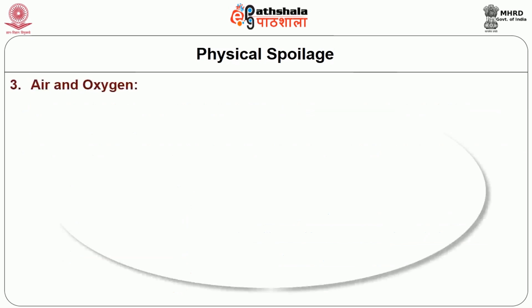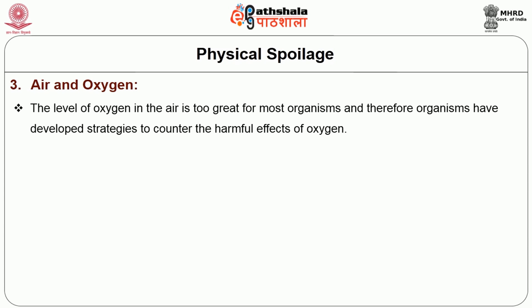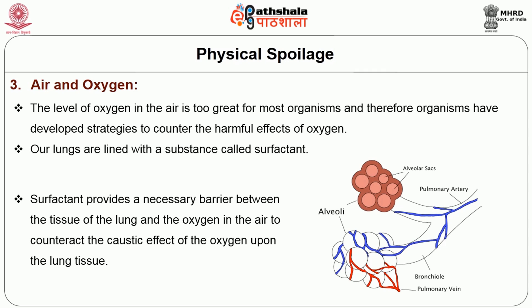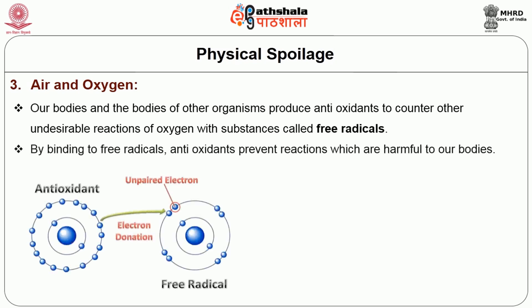Air comprises about 80% nitrogen and about 20% oxygen. The level of oxygen in the air is too great for most microorganisms, and therefore organisms have developed strategies to counter the harmful effect of oxygen. Our lungs are lined with a substance called surfactant, which provides a necessary barrier between the tissue of the lung and the oxygen in the air to counteract the caustic effect of oxygen upon lung tissues. Our bodies and the bodies of other organisms produce antioxidants to counter undesirable reactions of oxygen with substances called free radicals. By binding to free radicals, antioxidants prevent reactions which are harmful to our bodies.